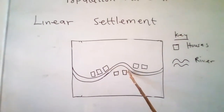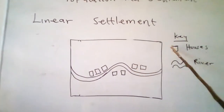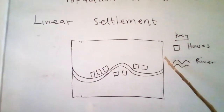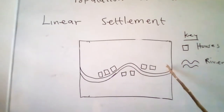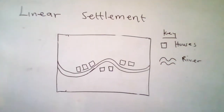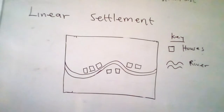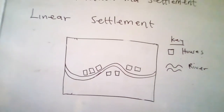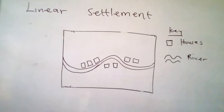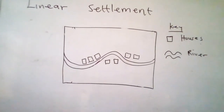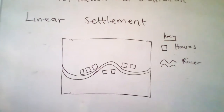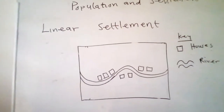In the diagram, the buildings or houses are arranged in straight lines. In the key, the boxes represent houses and the line represents a river. Now let's go to the importance of settlements.